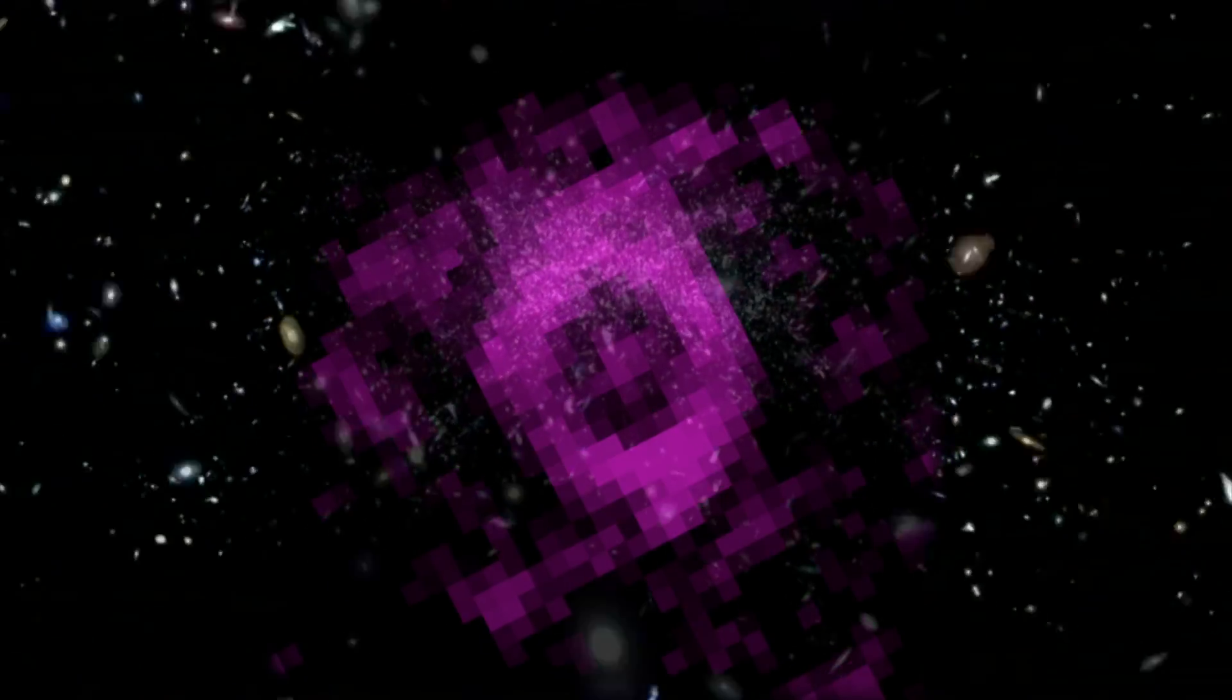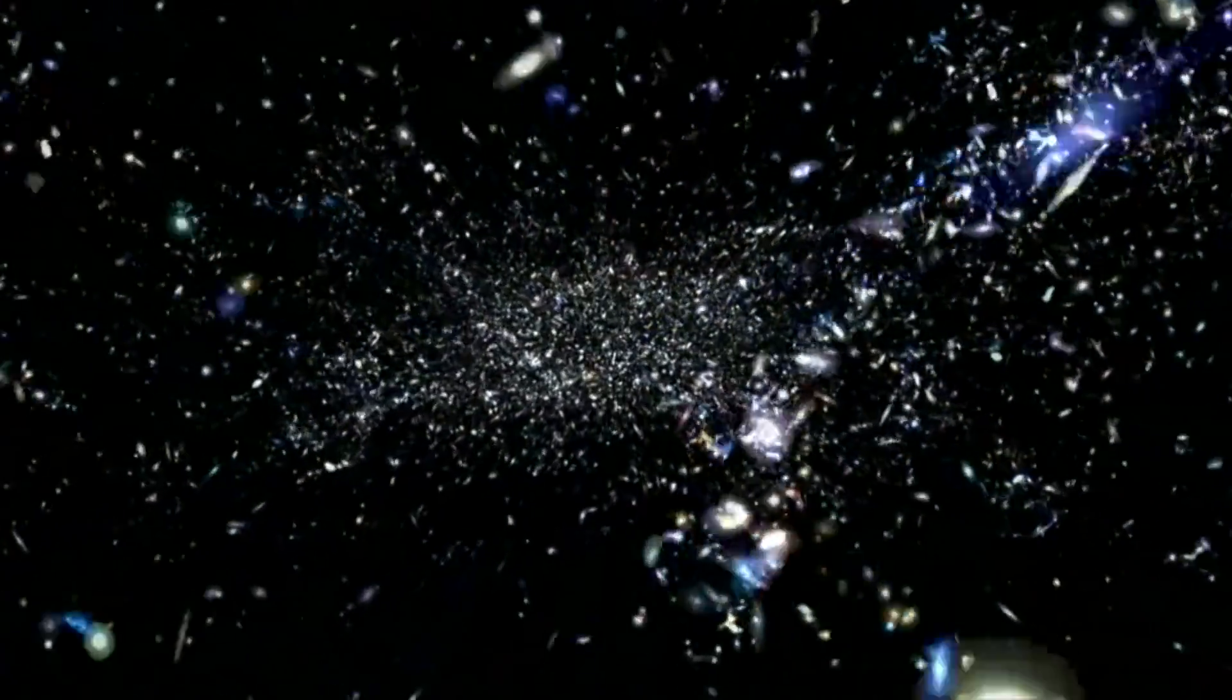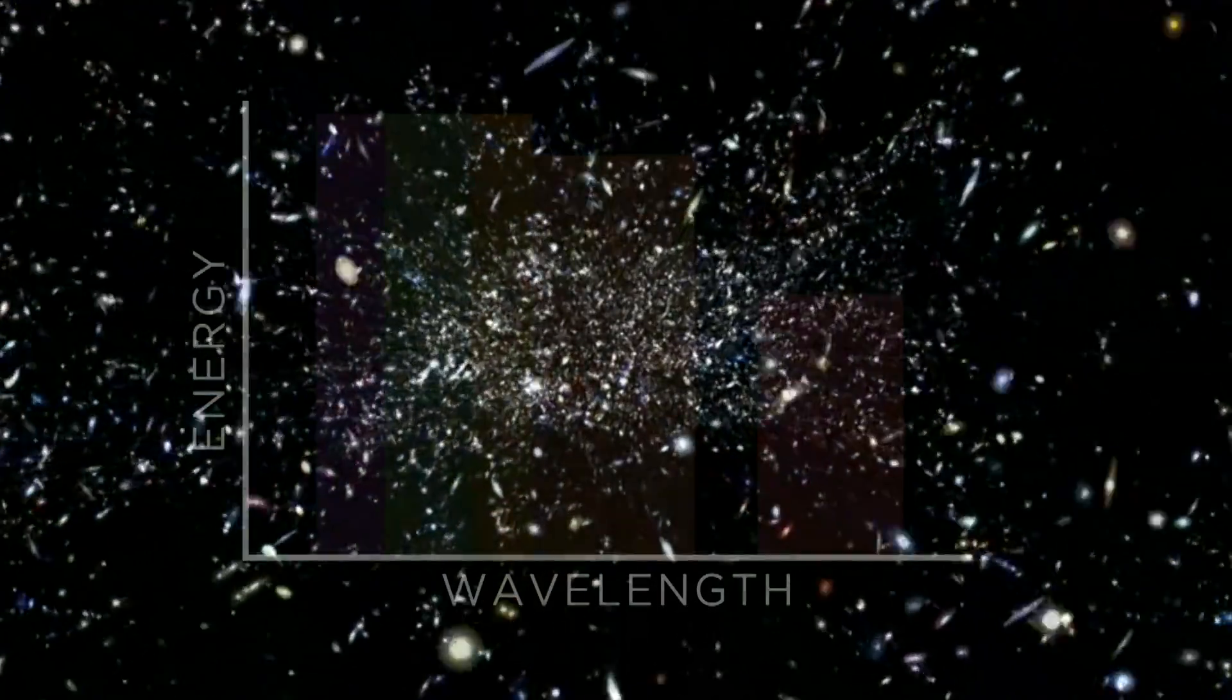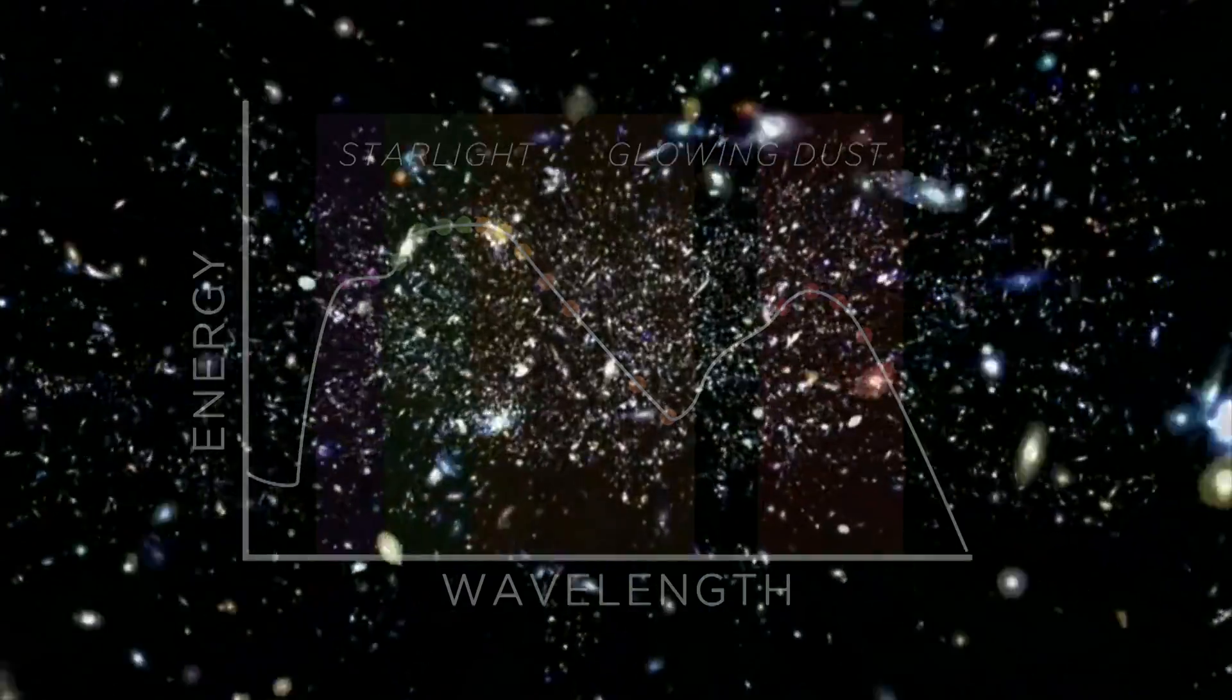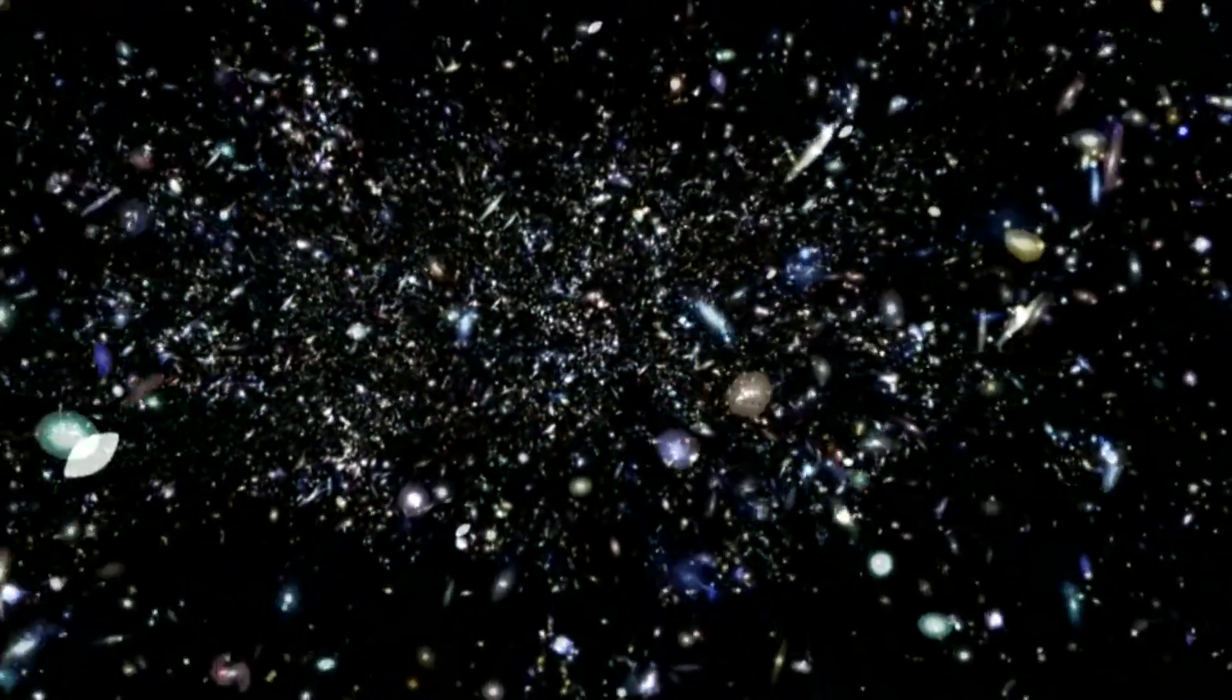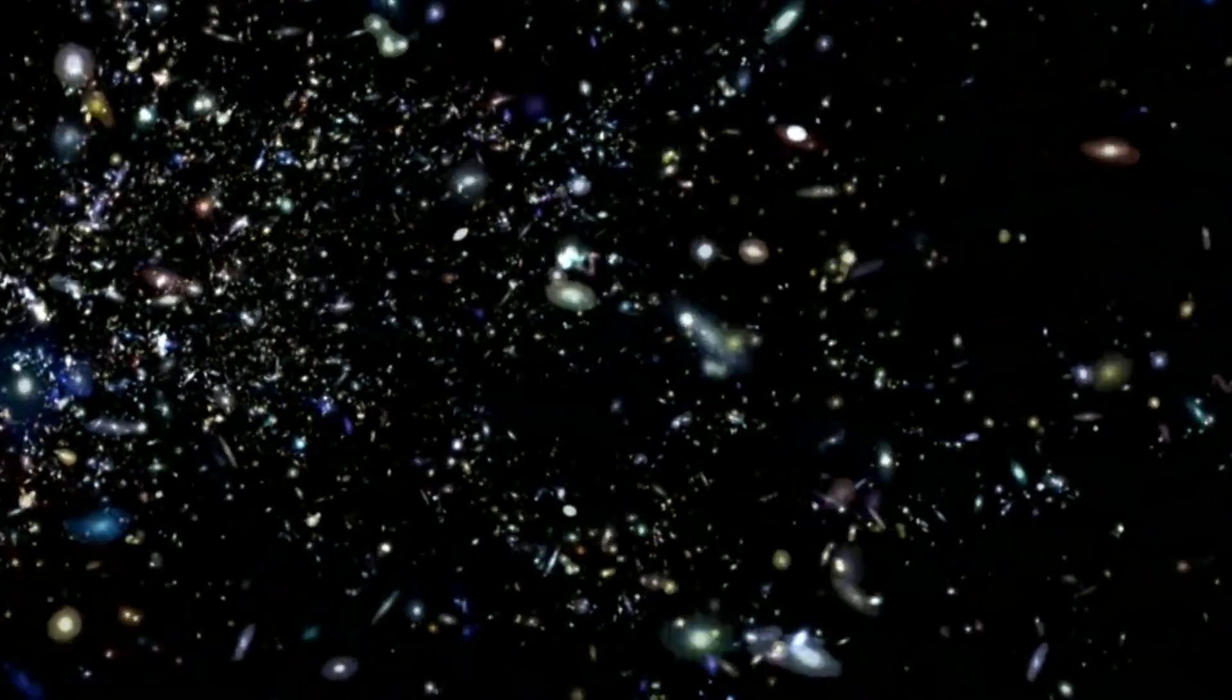In wavelengths from ultraviolet to far infrared, the object was to measure the energy output of galaxies, to find out how overall rates of star birth and death have changed over time. They concluded that galaxies in the aggregate are emitting half the energy they did 2 billion years ago.